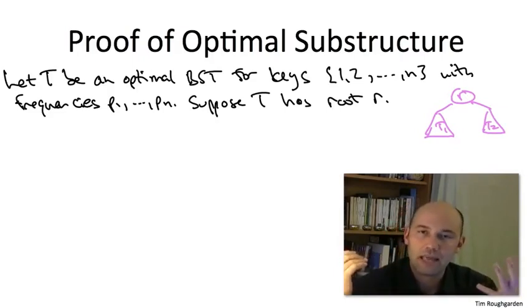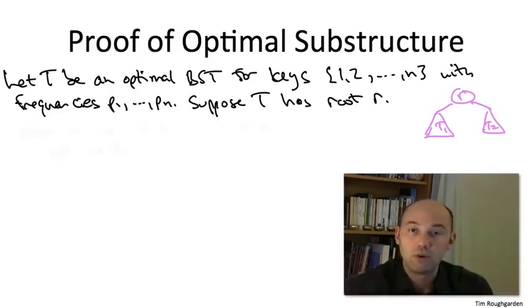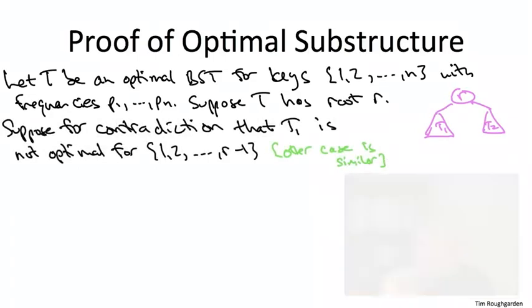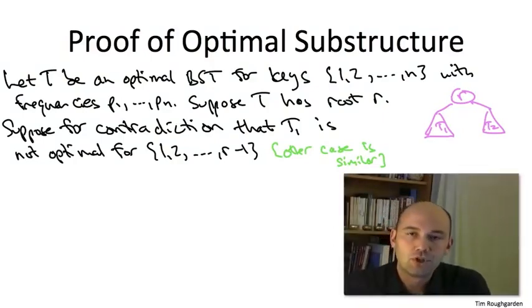The two cases are totally the same, whether in our contradiction we assume T1 is not optimal or T2 is not optimal. I'm just going to prove it in the case that T1 is not optimal. So if T1 is not optimal, there's got to be a search tree on its keys, 1 through r minus 1, which is better. Call that purportedly better solution T star 1.